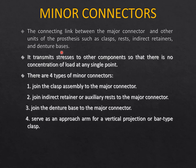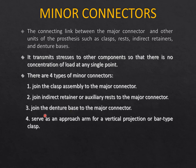Minor connectors are the connecting links between the major connector and any other part of the prosthesis — a rest, indirect retainer, reciprocal arm, clasp, direct retainer, or lattice framework. Like small screws and washers connecting components, they transmit stresses to prevent load concentration at any single point. There are four types: those joining the clasp assembly to the major connector; those joining retainers and auxiliary rests to the major connector; those joining the denture base to the major connector; and those serving as an approach arm for the vertical projection or I-bar clasp (as in the RPI system).